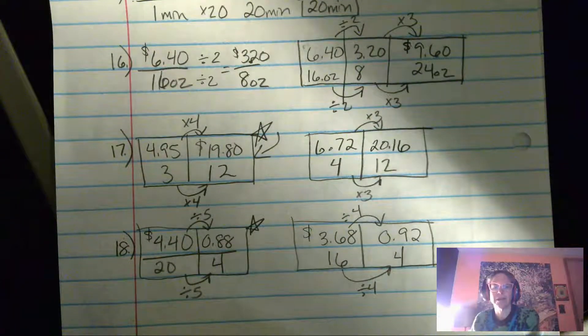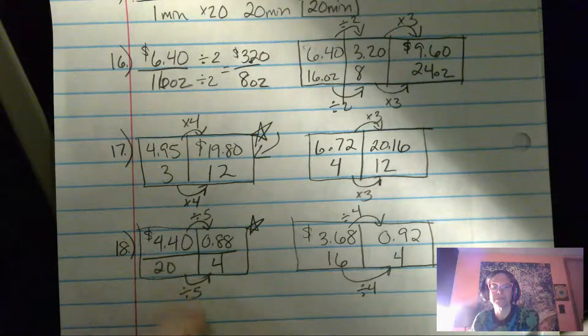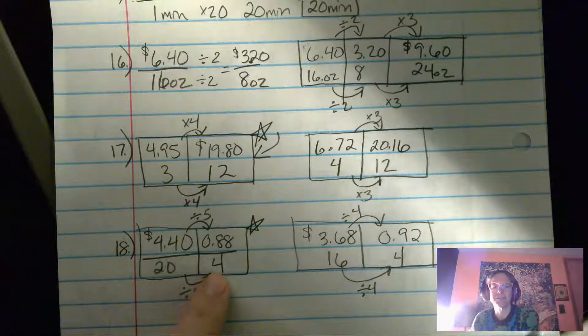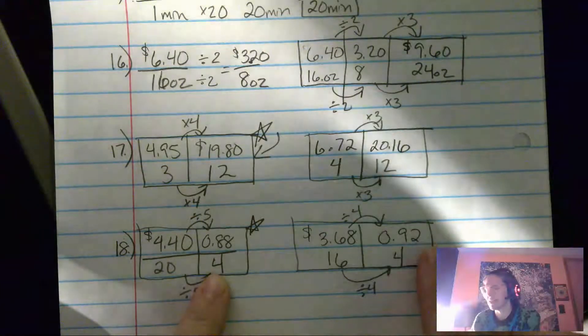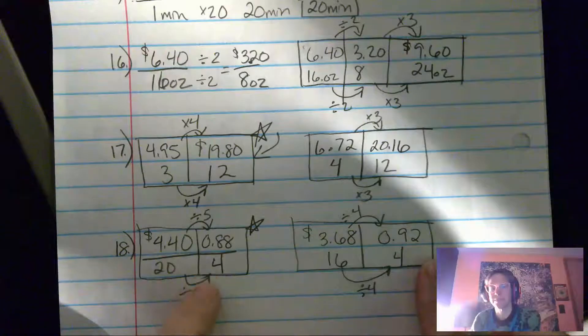And number 18, $4.40 for 20 ounces is the better deal because this one is 88 cents for four ounces, this one is 92 cents for four ounces. So this is cheaper per ounce.